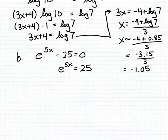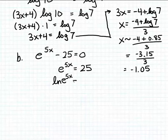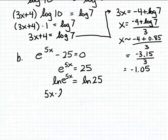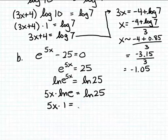Now I need to get that unknown x out of the exponent. I'll apply the appropriate log function to both sides. Since the base of the power is e, we're going to use log base e, or natural log, written as ln. Applying the natural log to both sides and using the exponent-to-coefficient property, we get 5x times the natural log of e is equal to the natural log of 25. Since natural log of e equals 1, we have 5x times 1 is equal to natural log of 25.